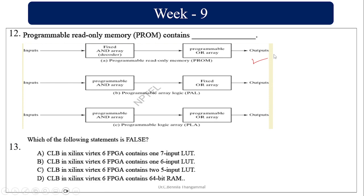Which of the following statements is false? In Xilinx Virtex 6 FPGA, it contains one 6-input LUT or two 5-input LUTs, and has 64-bit RAM or two 32-bit RAMs — all three options are true, so option A is the false statement.